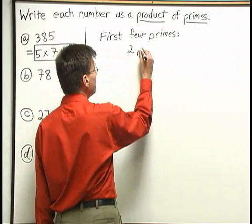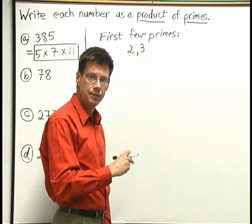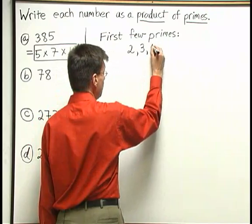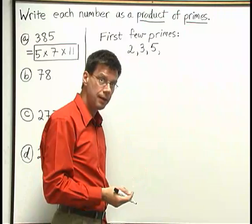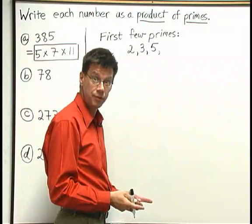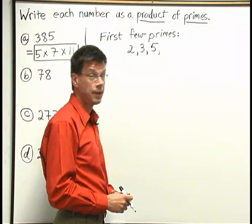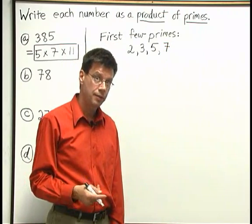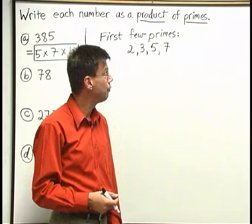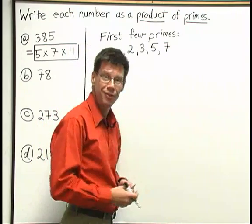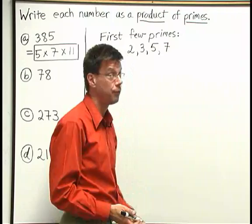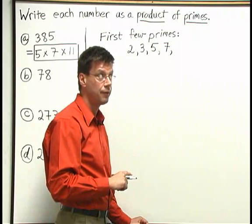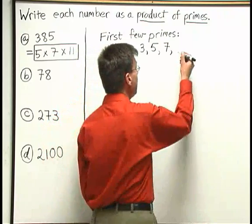The next prime number is 3. Now next in line is 4, but 4 is not a prime number — we can break 4 down into 2 times 2. After 4 comes 5, and 5 is a prime number. After 5 comes 6, but 6 is not prime; we can break 6 down into 2 times 3. After 6 comes 7, and 7 is prime — the only way to break it down into a multiplication problem is as 1 times 7. After 7 comes 8, which is not prime (8 could be 4 times 2). Then comes 9, but 9 is not prime (9 is 3 times 3). After 9 comes 10, which is 2 times 5, so not prime. The next prime number is 11.